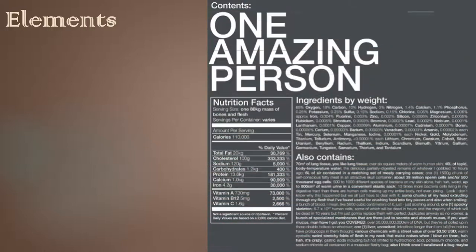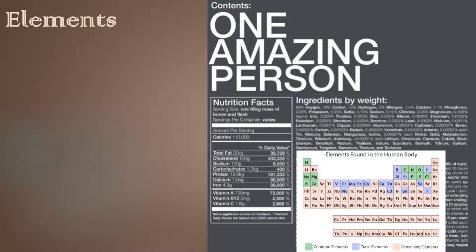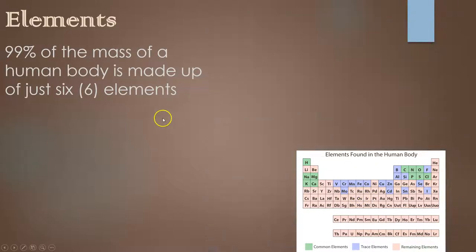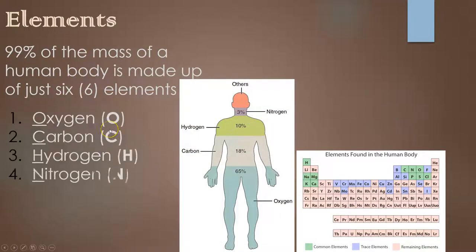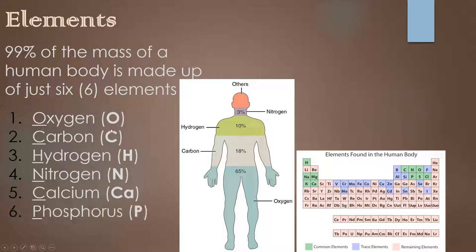Let's start off by looking at the elements. If you were to look at an ingredients label for a person — first off you're 110,000 calories — but if we look at ingredients by weight, you're made up of a lot of different elements. On the periodic table, the green ones are common, purple ones are trace elements, and the rest you're not really made up of at all. 99% of the mass of the human body is just six elements: oxygen, carbon, hydrogen, nitrogen, calcium, and phosphorus. That's it.